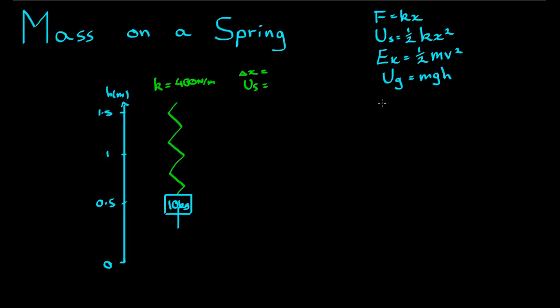So 100 is equal to k, that's 400, times x, getting x by itself. The extension of that spring caused by hanging the weight on it was 0.25 meters. So while the mass is currently sitting at 0.5 meters height off the ground, this spring, before we hung that mass on it, had natural height 0.75 meters.